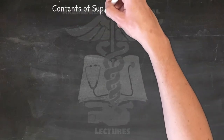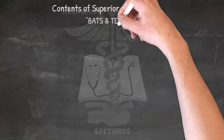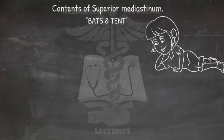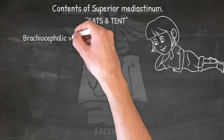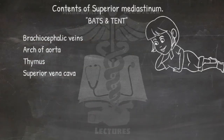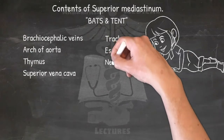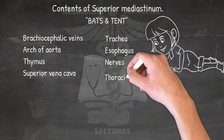For the contents of the superior mediastinum, use: 'Bats and tent.' The contents are: brachiocephalic veins, arch of aorta, thymus, superior vena cava, trachea, esophagus, nerves (vagus and phrenic), and the thoracic duct.